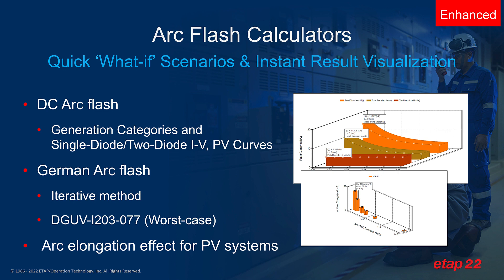We've added the arc elongation effect specifically for PV systems as well. As the arc is burning in the system, it consumes the material, causing the arc to essentially elongate or stretch, and once it has stretched to a certain threshold point,